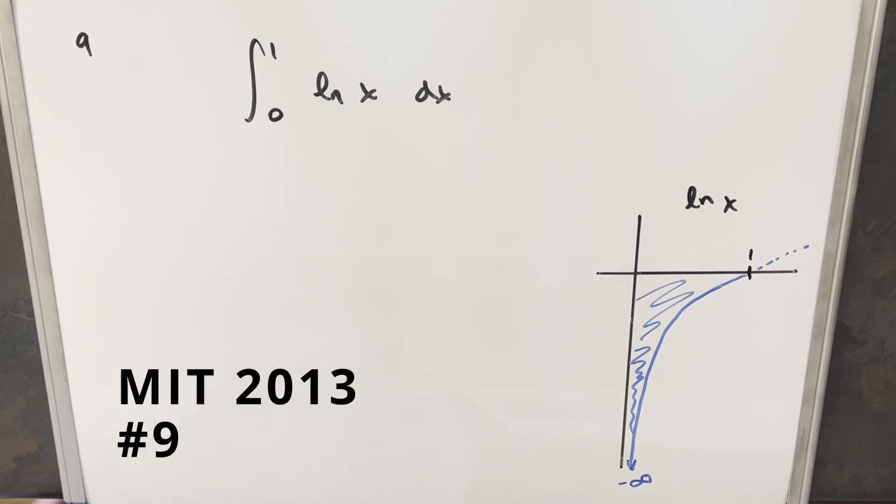Okay, we have another integral here. This one's from the MIT Integration B 2013, problem number nine. We have the integral from zero to one of natural log x dx.